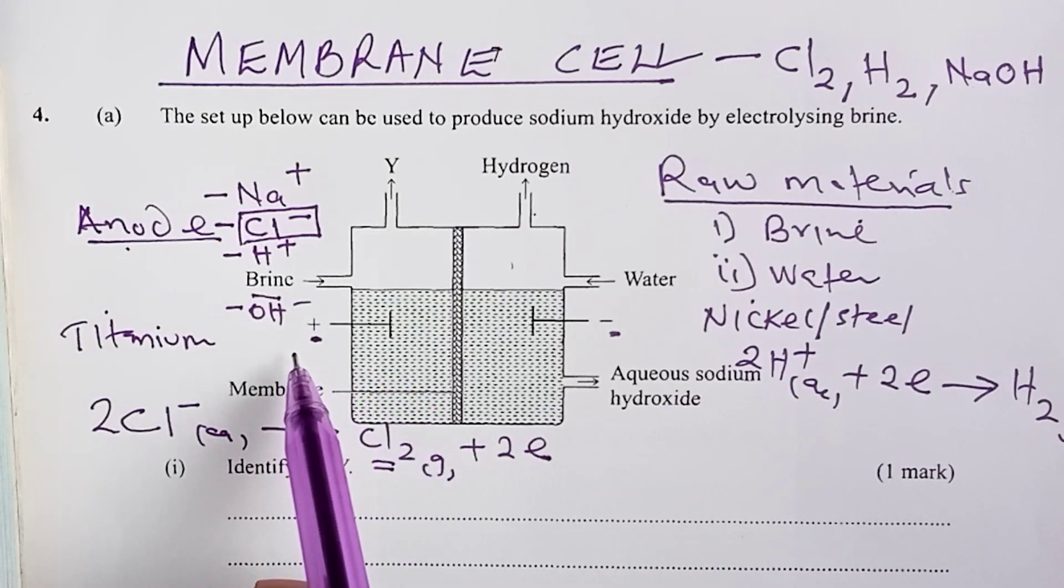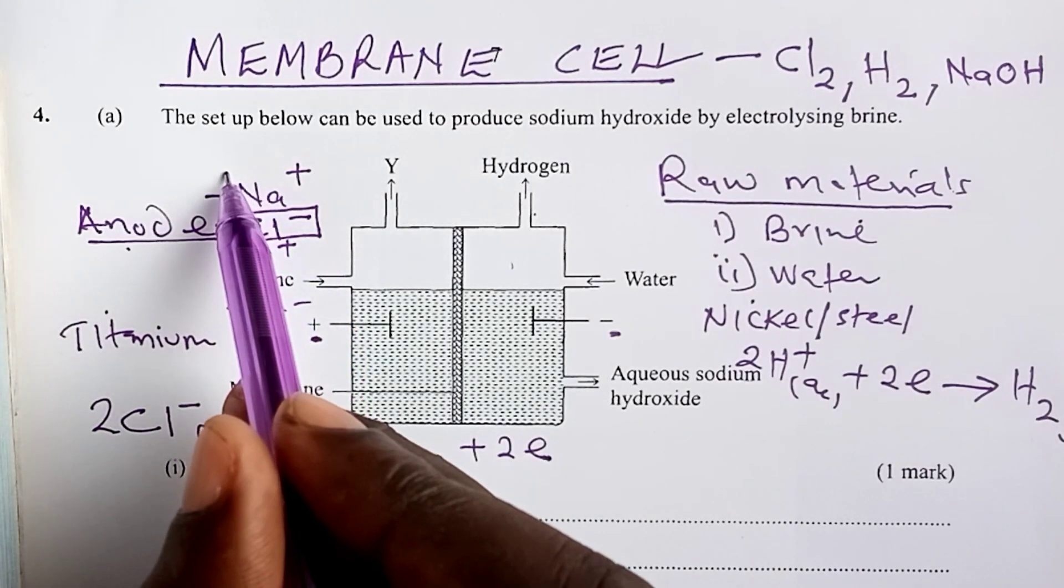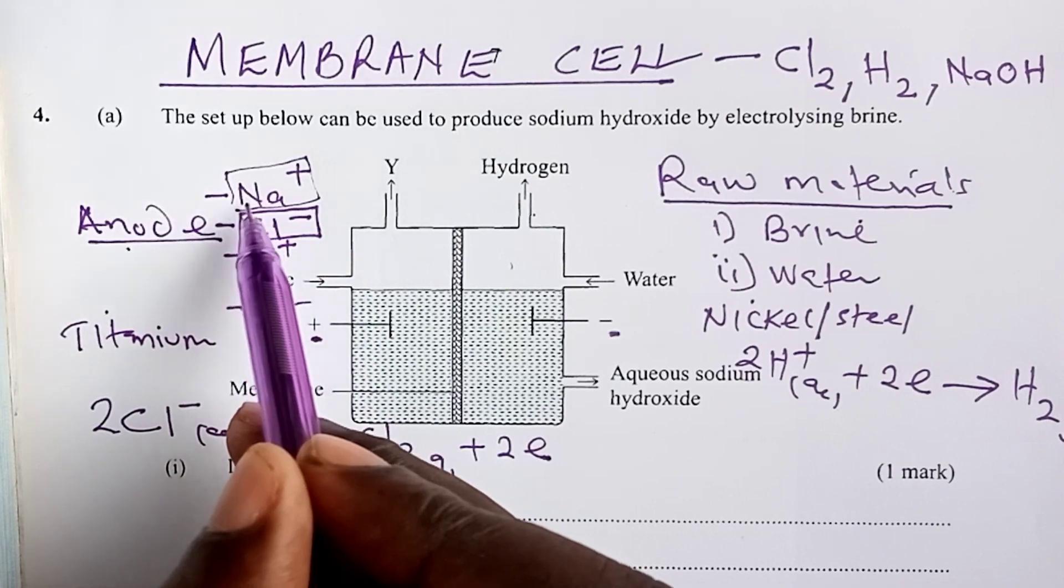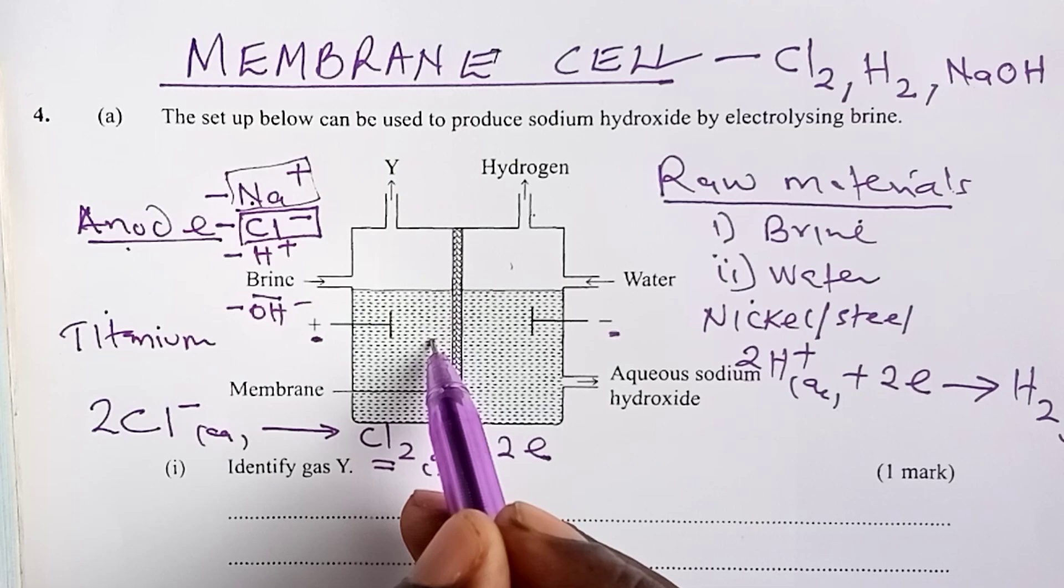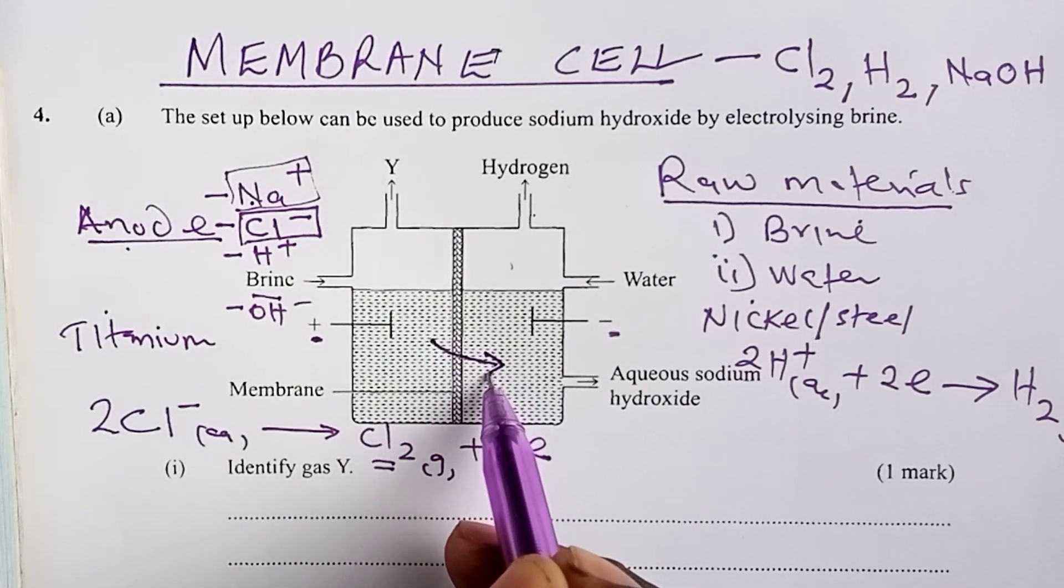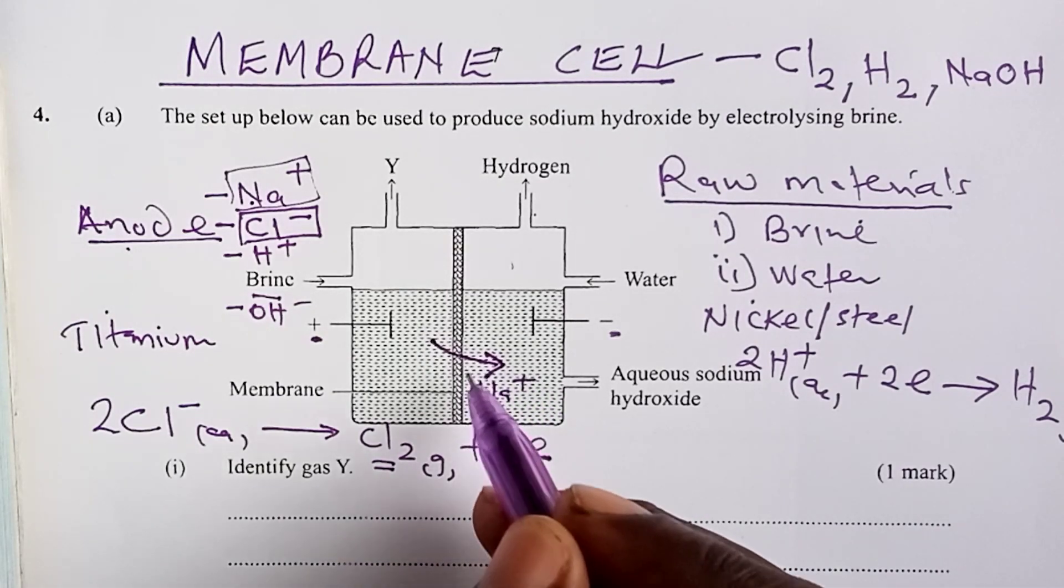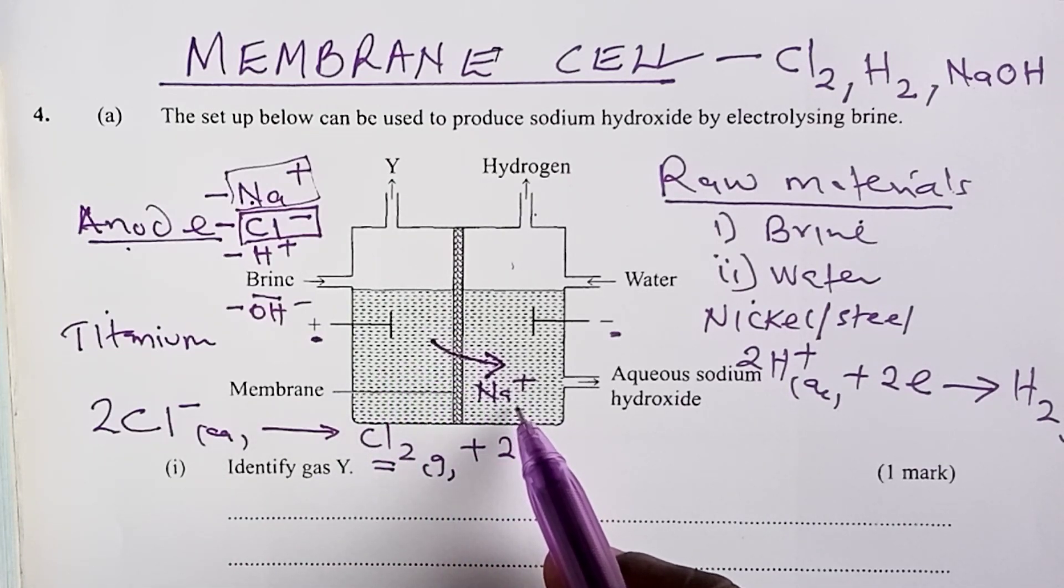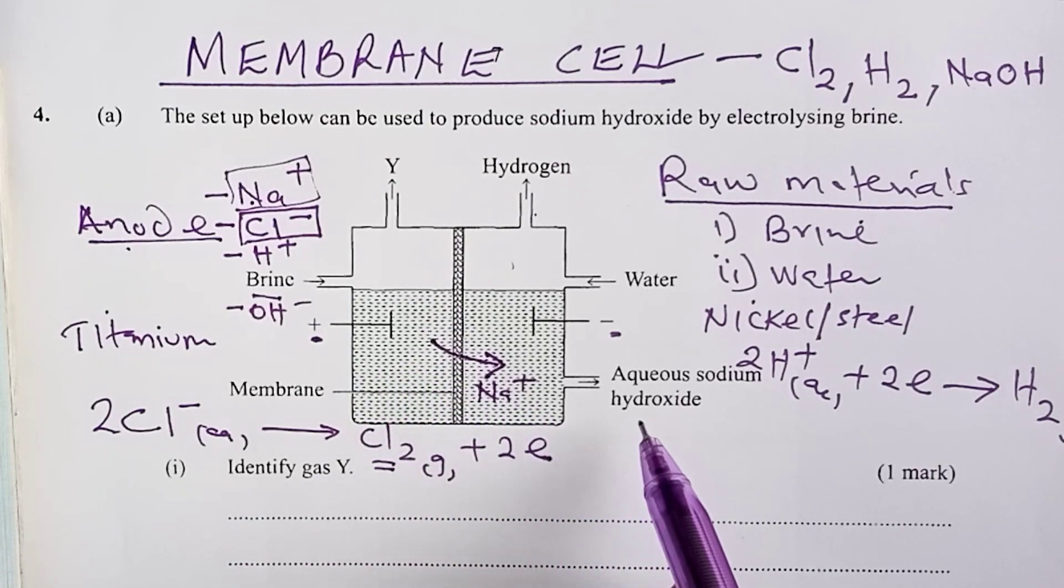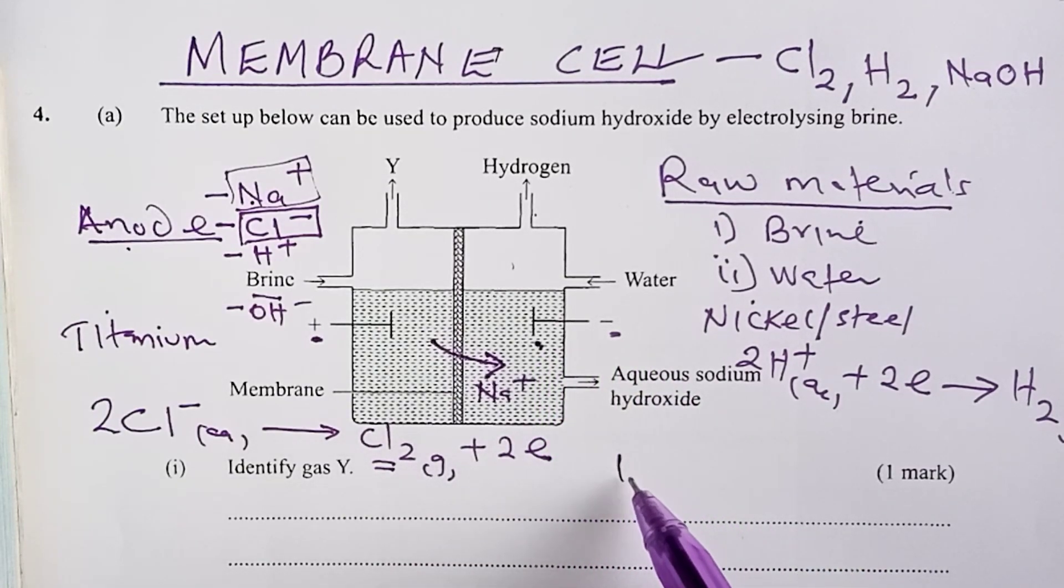So, back to our anode. The moment chloride ions have been discharged, we remain mainly with sodium ions. These sodium ions then migrate through the membrane to the cathode. The sodium ions are able to move through the membrane from anode to cathode, where they combine with the hydroxyl ions that were left on this other side, and we are able to form sodium hydroxide from the reaction between sodium ions and hydroxyl ions.